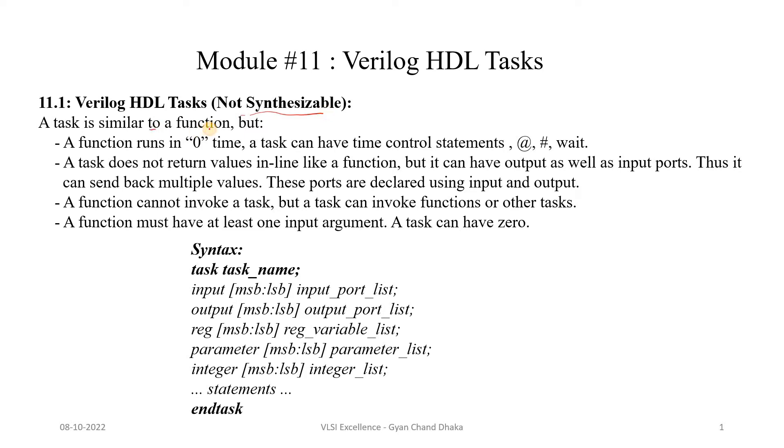A task is similar to a function, but the differences are as following. A function runs in zero time unit, but a task can have timing control statements like event control, inter-assignment delay, intra-assignment delay, or wait statements. Basically, a function should not have any timing control statements, but a task can have them.